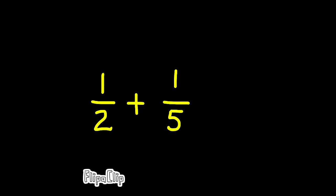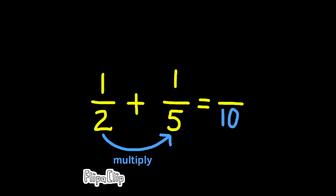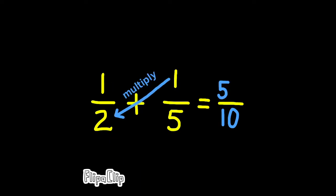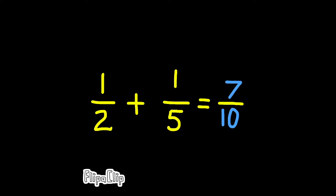Here's the first step in the trick: multiply the two denominators. Here's the second step: multiply the left numerator by the right denominator. In the third step, we multiply the right numerator by the left denominator. In doing these three steps, you can see that one-half plus one-fifth becomes five plus two over ten. Add five plus two to get seven, and you see that one-half plus one-fifth equals seven-tenths.